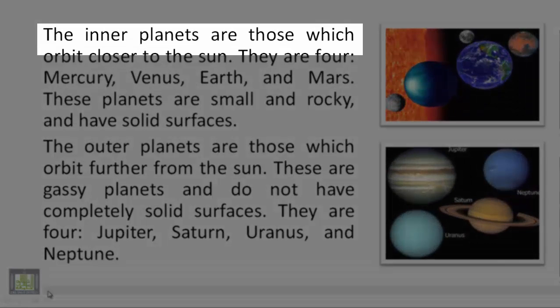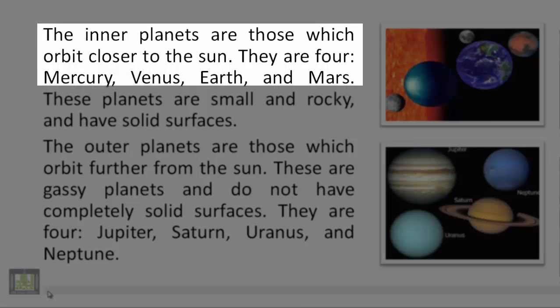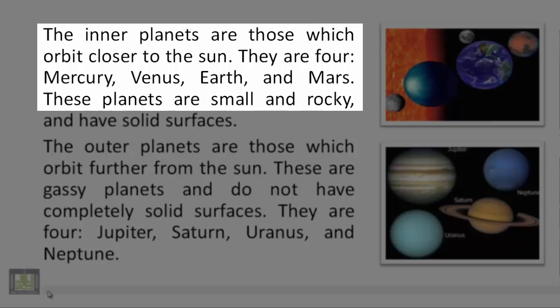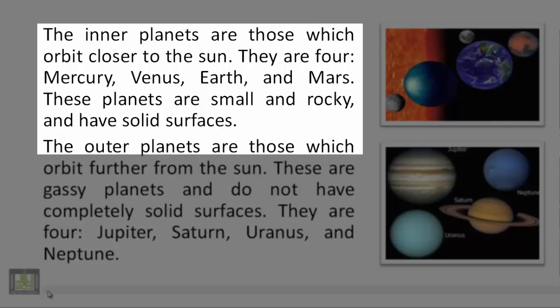The inner planets are those which orbit closer to the Sun. They are four: Mercury, Venus, Earth, and Mars. These planets are small and rocky and have solid surfaces.